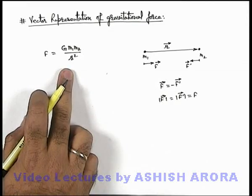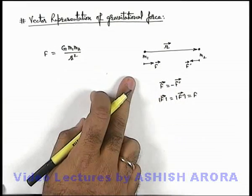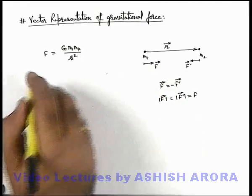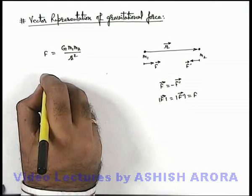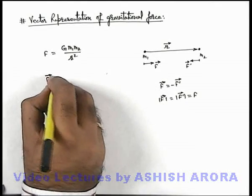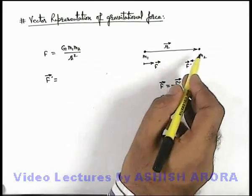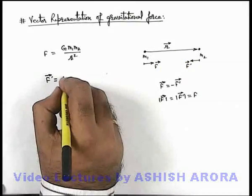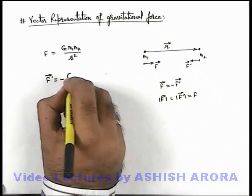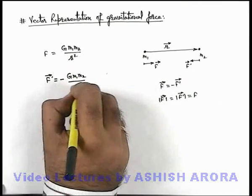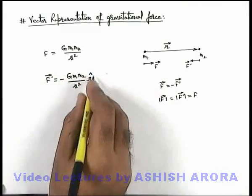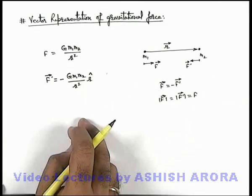If we wish to write down the vector form of these forces we can write here in this situation F dash vector, which is the force acting on m2, it is opposite to r vector so it can be given as negative of G m1 m2 by r square, r cap, that is the direction vector along r vector.